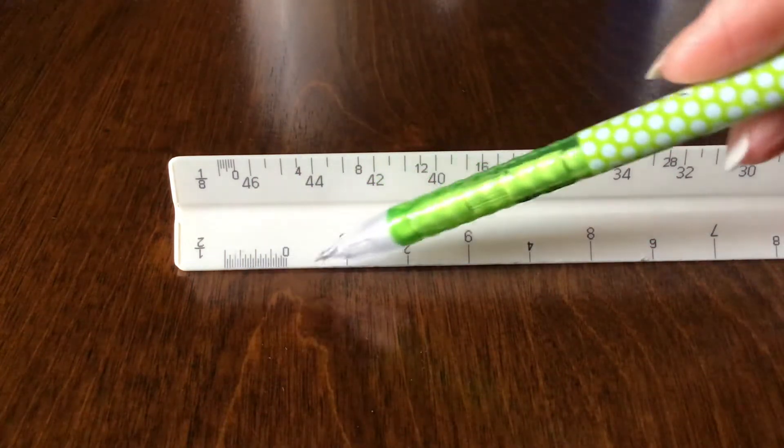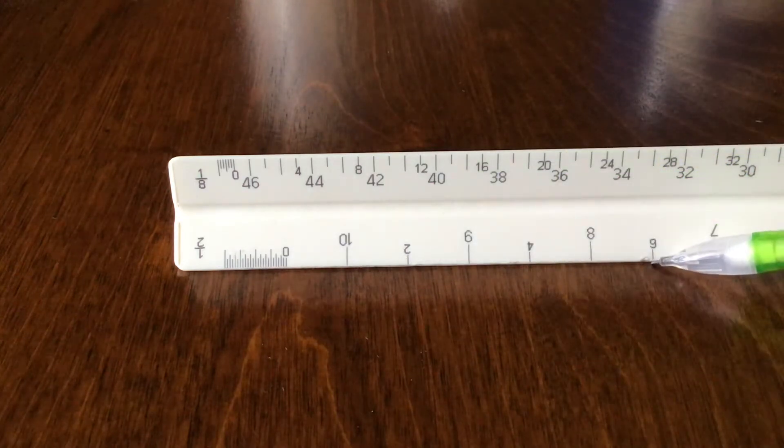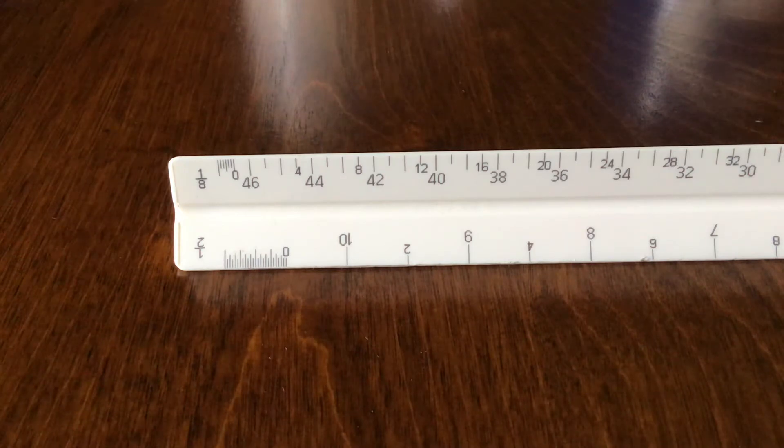For the half-inch scale you're going to be paying attention to 0, 2, 4, 6, 8, 10, 12 and so on and so on.